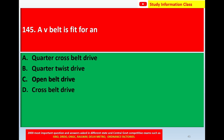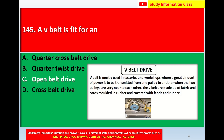For question number 144, tool bits are joined to the tool shank by silver brazing. Question number 145: A V-belt is fit for — Option A: quarter cross belt drive, Option B: quarter twist drive, Option C: open belt drive, Option D: cross belt. The correct answer is Option C, open belt drive. V-belt is mostly used in factories and workshops where a great amount of power is to be transmitted from one pulley to another when the two pulleys are very near to each other. V-belts are made of fabric and cords molded in rubber and covered with fabric and rubber.